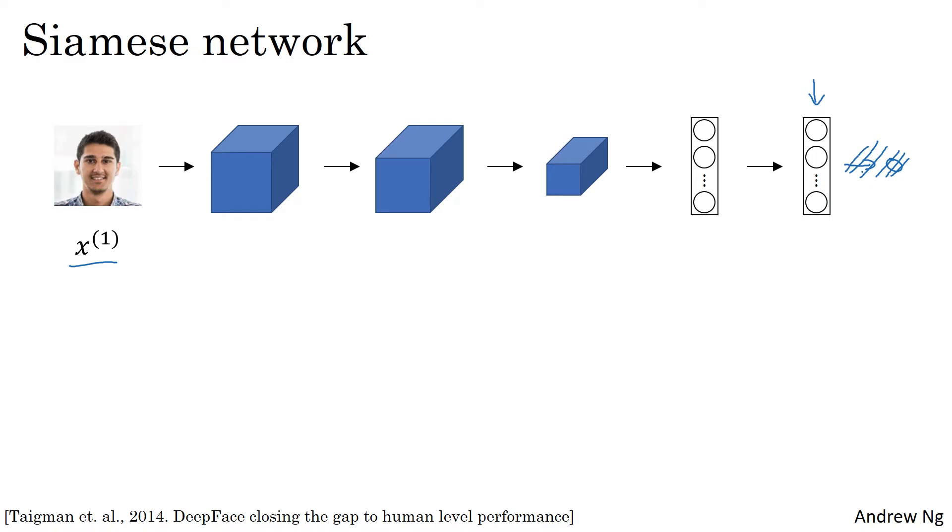Instead, we're going to focus on this vector of, let's say, 128 numbers computed by some fully connected layer that is deeper in the network. And I'm going to give this list of 128 numbers a name. I'm going to call this f of x1. And you should think of f of x1 as an encoding of the input image x1. So it's taken the input image, here this picture of Kian, and it's re-representing it as a vector of 128 numbers.